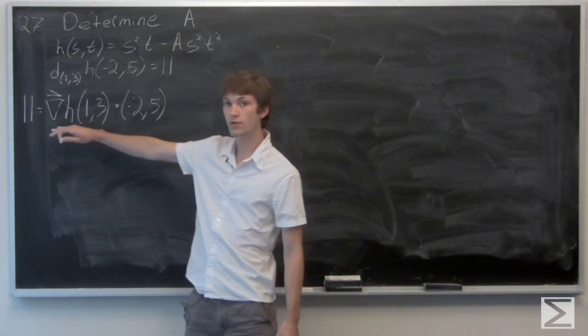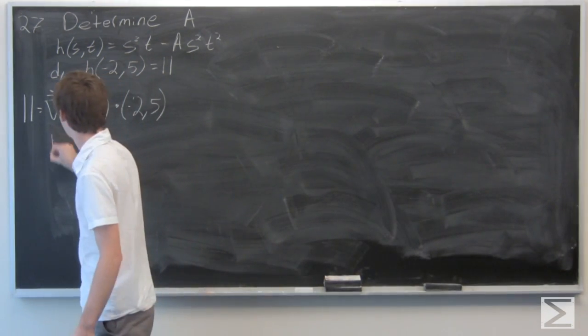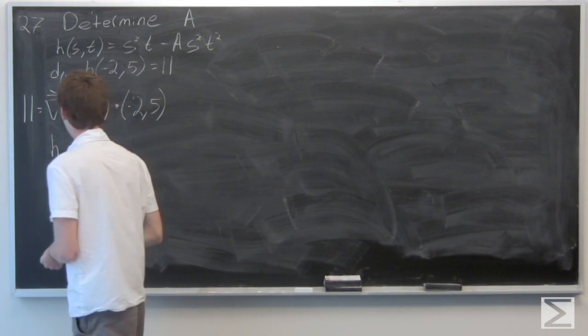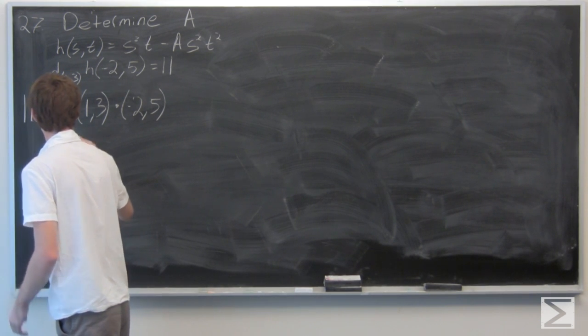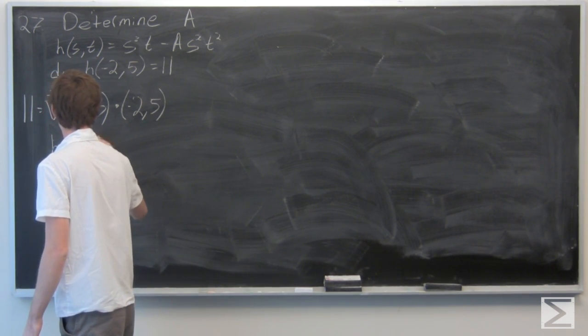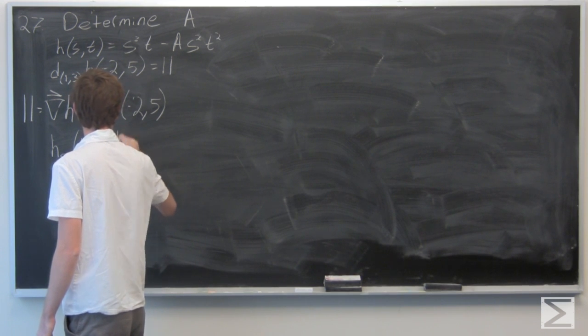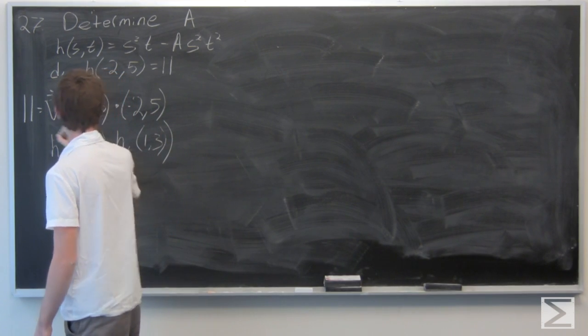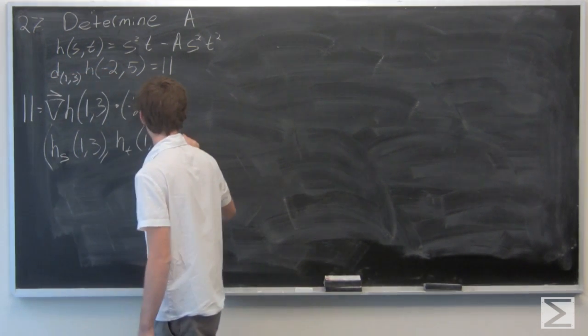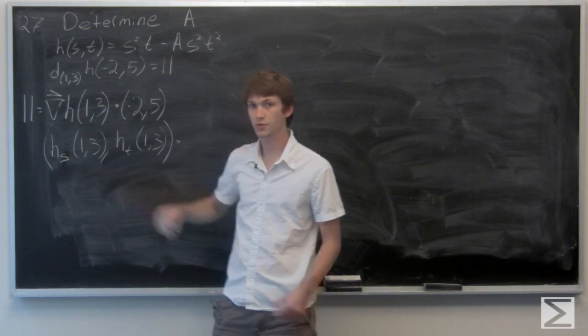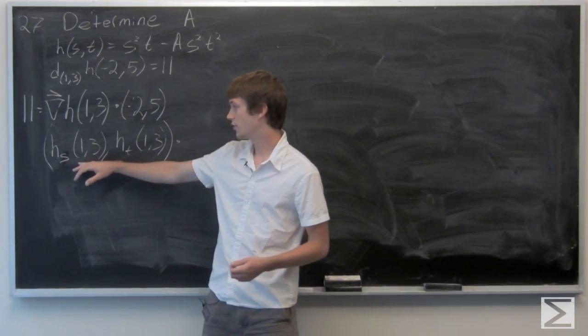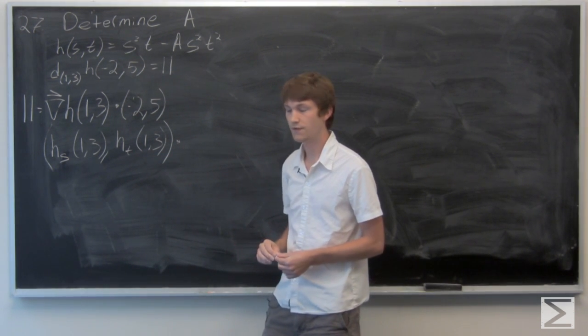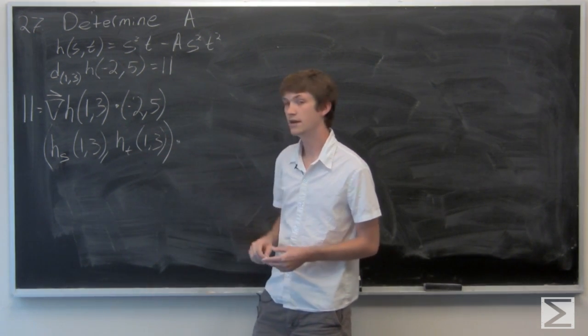And we know that the gradient vector is just the partial derivative of h with respect to s at the point as the first component, and the second component is the partial derivative of h with respect to t at the point.